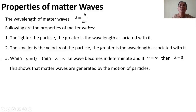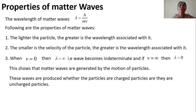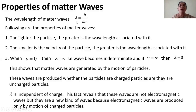This shows that matter waves are generated by the motion of particles. So the motion of the particles only generates the matter waves. These waves are produced whether the particles are charged or uncharged. The formula for lambda does not involve any charge. So matter waves could be obtained for particles which are charged as well as uncharged — lambda is independent of charge. This fact reveals that these waves are not electromagnetic waves but are a new kind of waves, because electromagnetic waves are produced by moving charged particles.